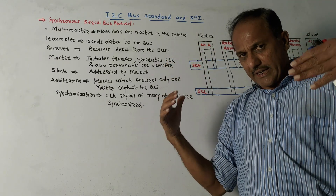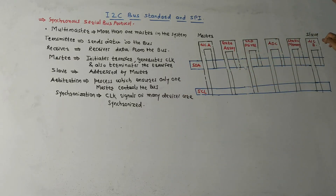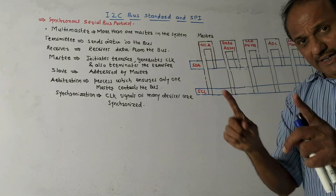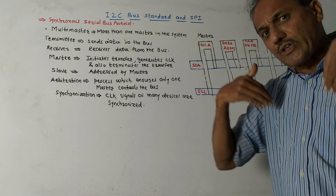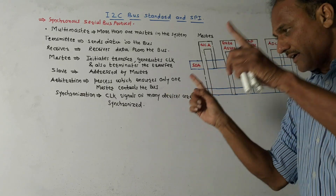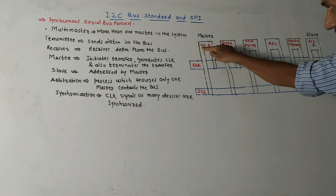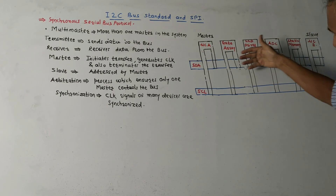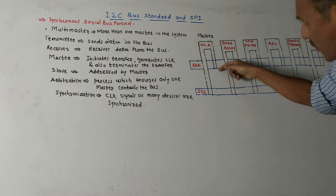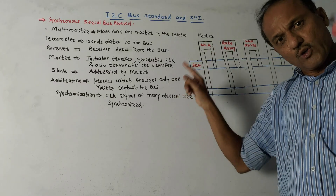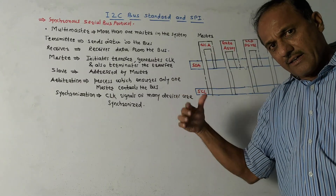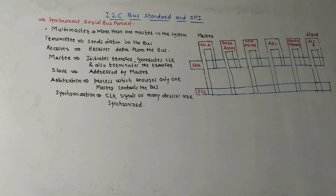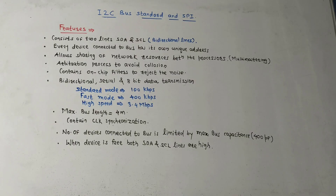In another condition, if microcontroller A wants to receive data from microcontroller B, remember that microcontroller A will still be the master, but instead of transmitting, microcontroller A will address microcontroller B, and microcontroller B will start sending the data. It will be received by microcontroller A, and microcontroller A will terminate the process when done. This covers the basics of I2C bus standard.